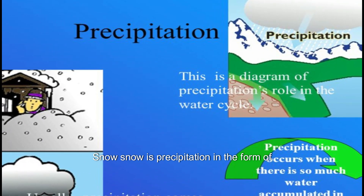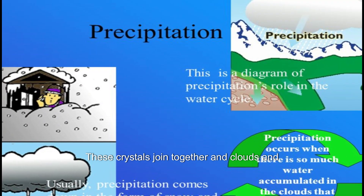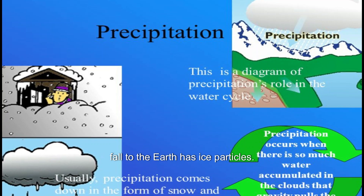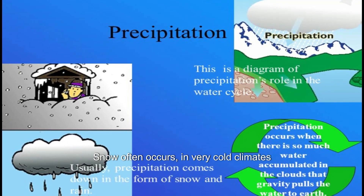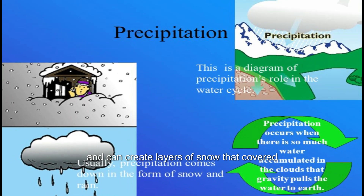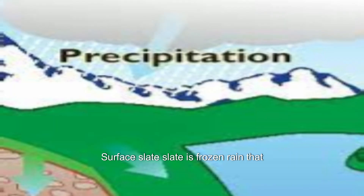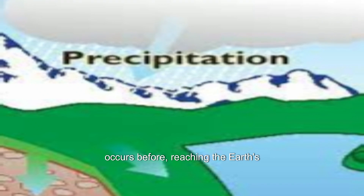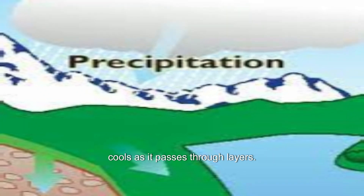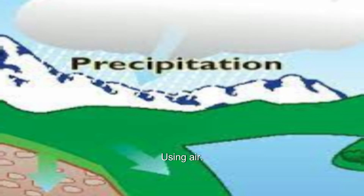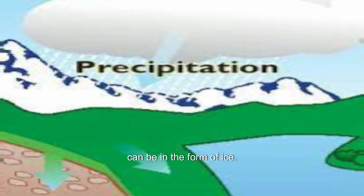Snow is precipitation in the form of ice crystals that form snowflakes. These crystals join together in clouds and fall to the Earth as ice particles. Snow often occurs in very cold climates and can create layers of snow that cover the Earth's surface. Sleet is frozen rain that occurs before reaching the Earth's surface. It happens when rainwater rapidly cools as it passes through layers of freezing air. When it reaches the Earth's surface, it can be in the form of ice pellets.